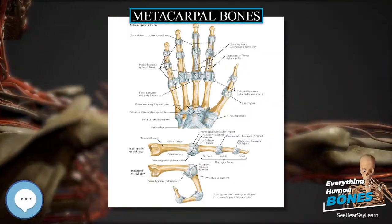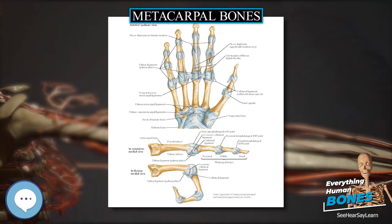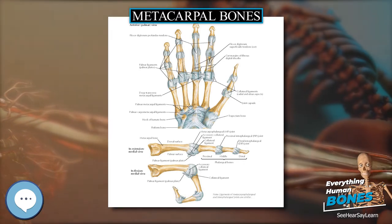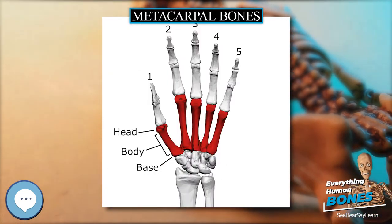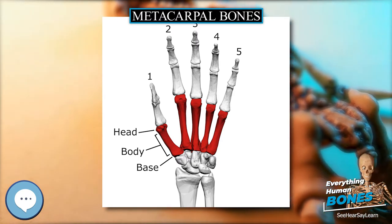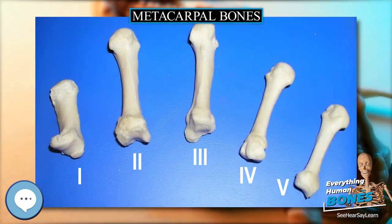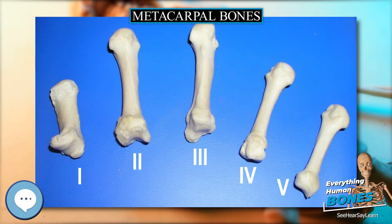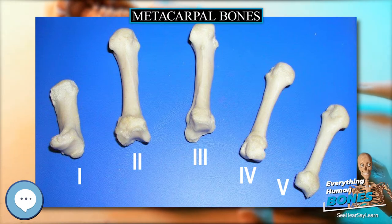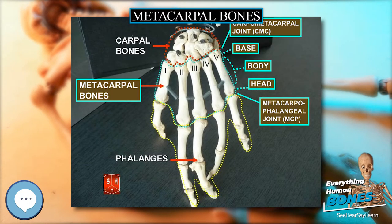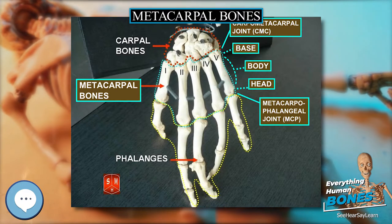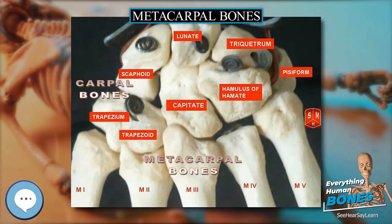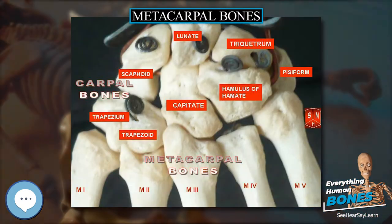Metacarpal bones in human anatomy: the metacarpal bones, or metacarpus, form the intermediate part of the skeletal hand, located between the phalanges of the fingers and the carpal bones of the wrist, which forms the connection to the forearm. The metacarpal bones are analogous to the metatarsal bones in the foot.